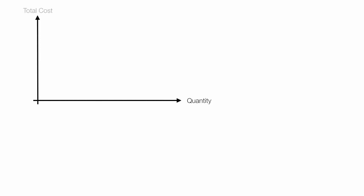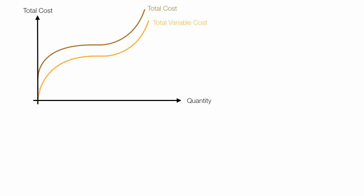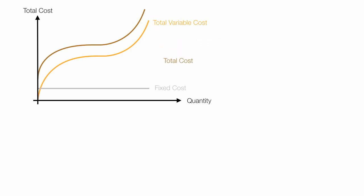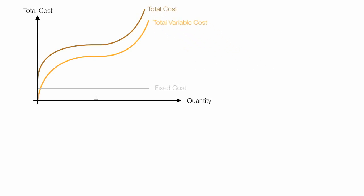I put quantity on the horizontal axis and total cost on the vertical axis. I draw in the total cost curve and the total variable cost curve, and lastly I draw in the fixed cost curve. The total cost and total variable costs are parallel to each other. Total cost is equal to total variable cost plus fixed cost. Fixed cost is the distance between total cost and total variable cost.